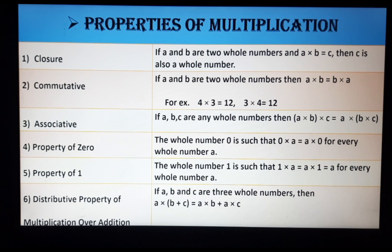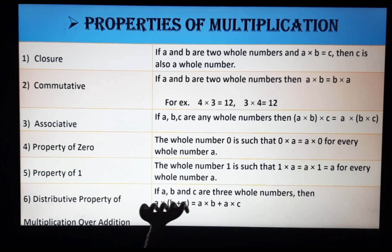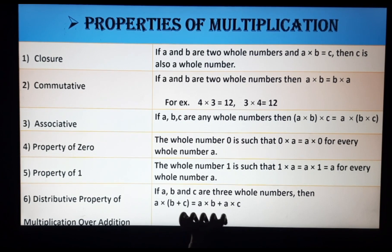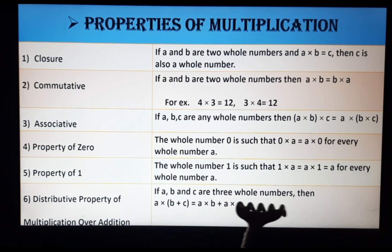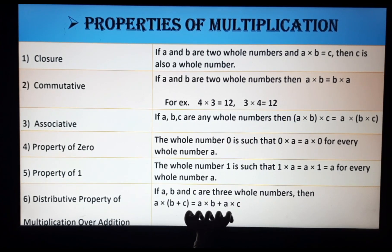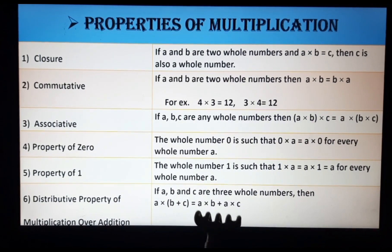Next is the distributive property of multiplication over addition. In this property you will see two operations: multiplication and addition. If you have three whole numbers a, b, c, then a × (b + c) = a × b + a × c. The result will be the same on both the left-hand side and right-hand side.